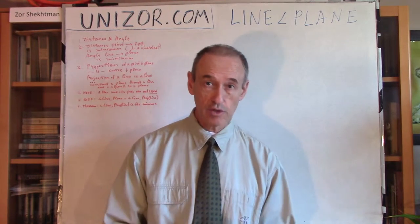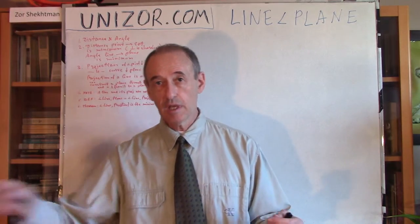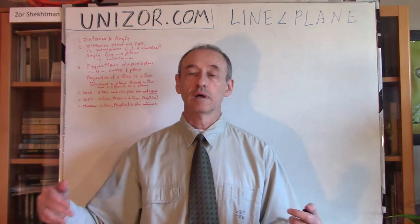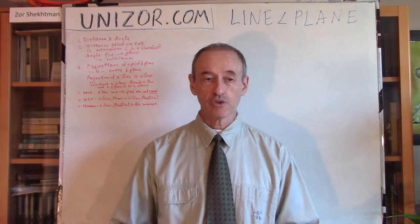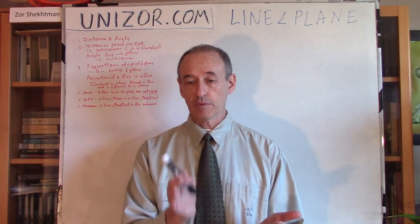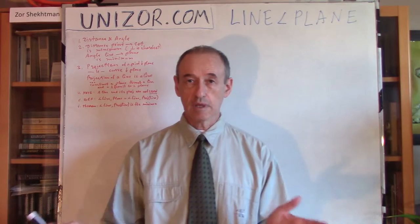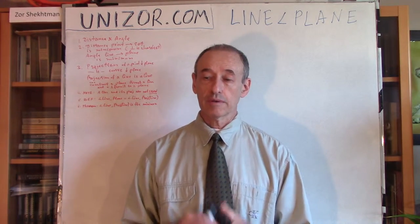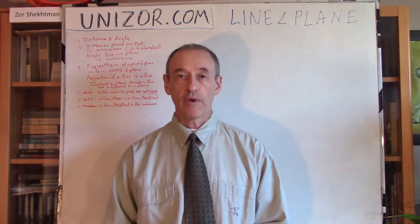Both are additive measures, which means if you move from point A to B and then from B to C, the measure from A to C, if it's along the same direction, is added together. Similarly, the measure of rotation from one direction to another, and then from that to a third one — the sum of two measures is the measure of the entire movement. So there is a similarity. Now let's move this similarity a little further.